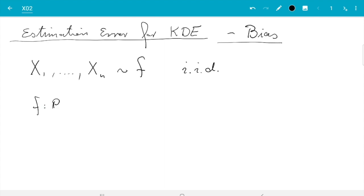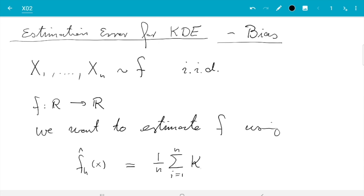So, f from R to R is the function. And we want to estimate this using the kernel density estimate, which is f hat h of x equals 1 over n, sum i from 1 to n, k_h(x minus x_i).